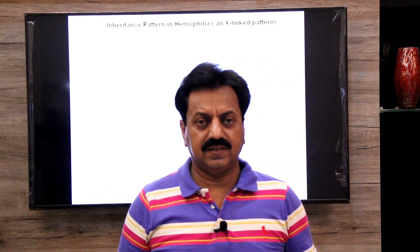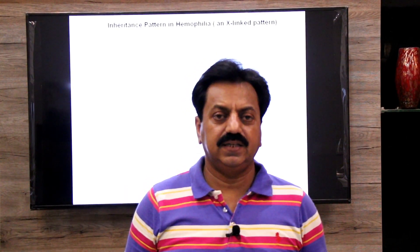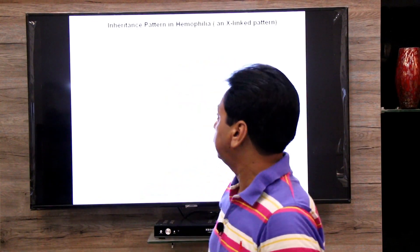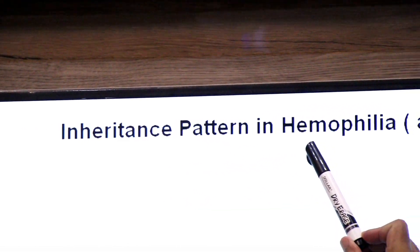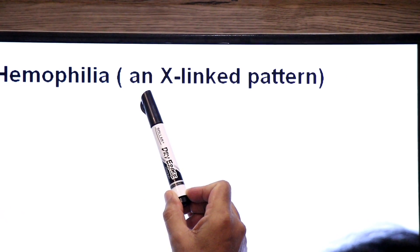Hello dear students, welcome back. In the last lecture we discussed inheritance patterns in color blindness. Today we will focus on inheritance patterns in hemophilia. It is also an X-linked recessive character. Hemophilia ke genes sirf X-chromosome pe pae jate hain aur Y-chromosome pe absent hote hain, jis ki wajah se isko X-linked trait kaha jata hai. We will study genetic crosses on how hemophilia is transmitted via X-chromosome, using examples from our textbook.